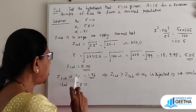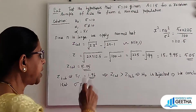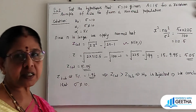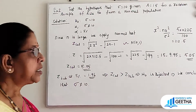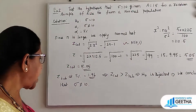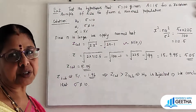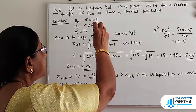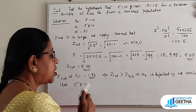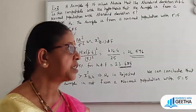Z table value at 5% is 1.96. Comparing both values, Z calculated value 5.05 is greater than Z table value 1.96. Therefore H0 is rejected. We conclude that sigma is not equal to 10. When H0 is rejected, H1 is accepted, so sigma is not equal to 10.